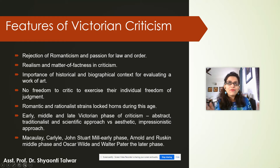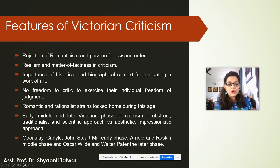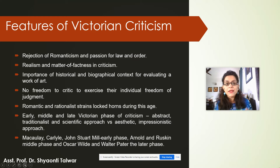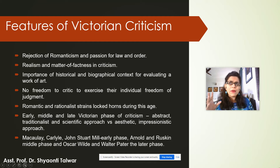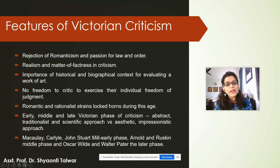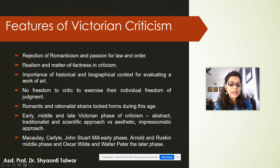Victorian criticism can be divided into three phases: the early phase, the middle phase, and the late Victorian phase. In the early and middle phases, there was a very strict adherence to tradition and morality, which lessens in the late Victorian phase. Romantic and rationalist tendencies kept locking horns during this age — they coexisted but were often in conflict.